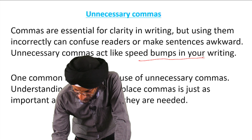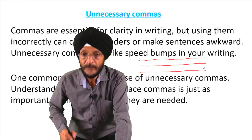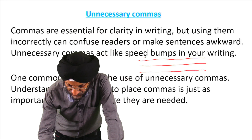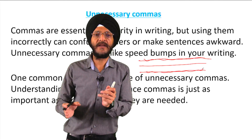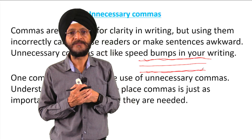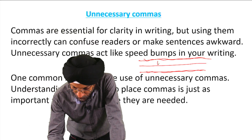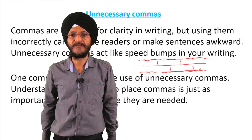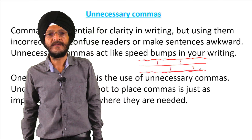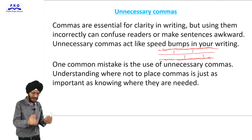Suppose there is a two-lane road with fencing on both sides. No pedestrian can cross the road from any place. If we put speed breakers at different places, what will happen? When there is fencing on both sides of the road, there is no need for speed bumps — these are unnecessary speed bumps.